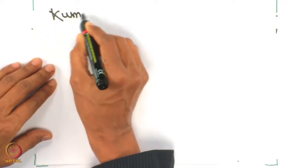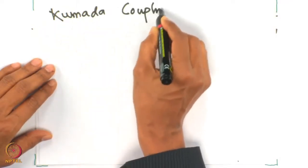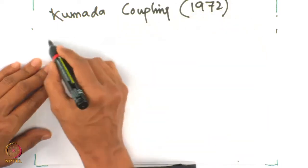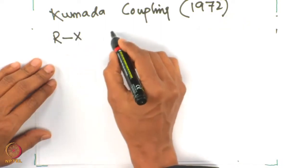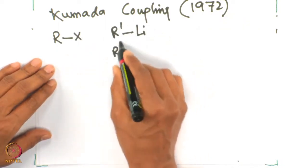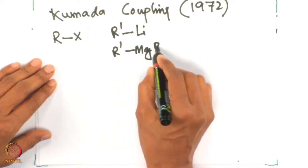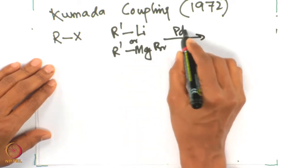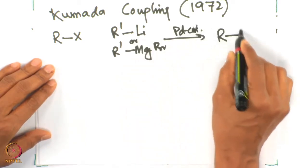Today we start discussing Kumada coupling. Kumada coupling is the one where organolithium or organomagnesium reagents are used for carbon-carbon bond formation. Kumada coupling was discovered in 1972 — one of the golden eras. R-X with R-Li or R-MgBr in the presence of a palladium catalyst gives R-R′.